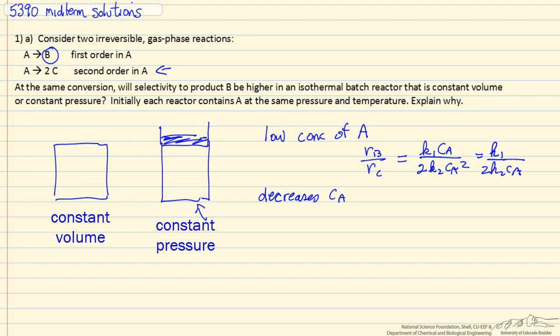And thus, if we want to have the highest selectivity, we would pick the constant pressure batch reactor.